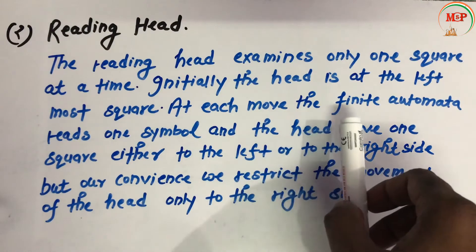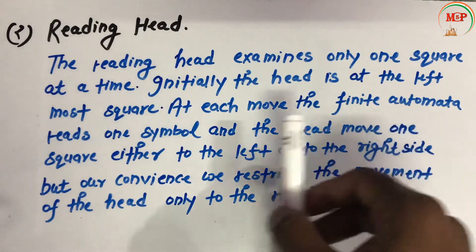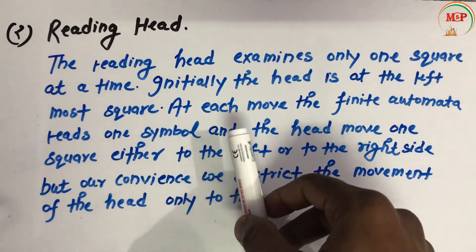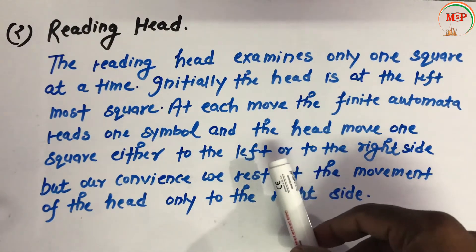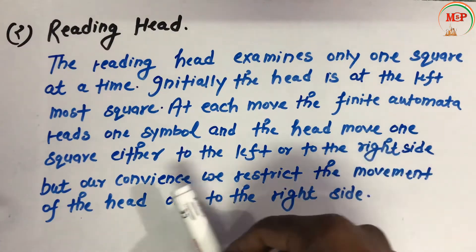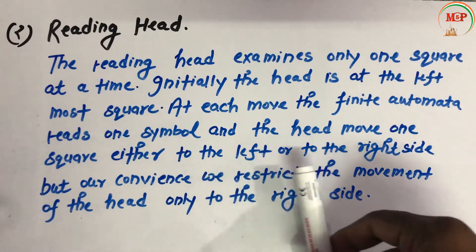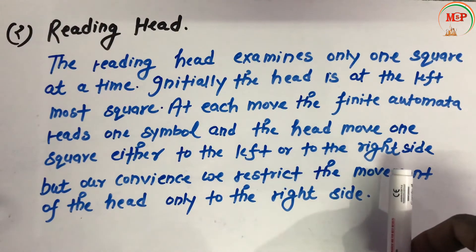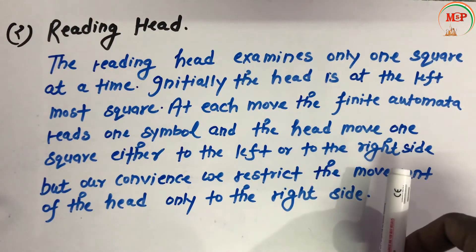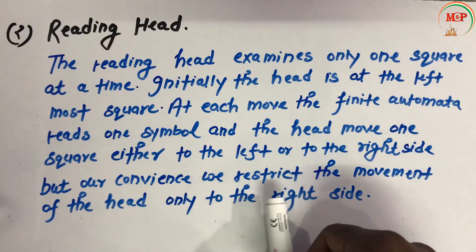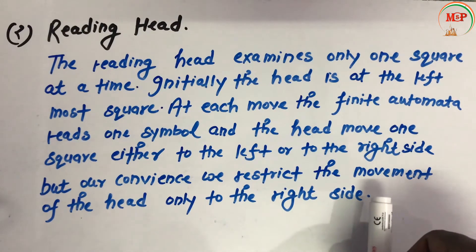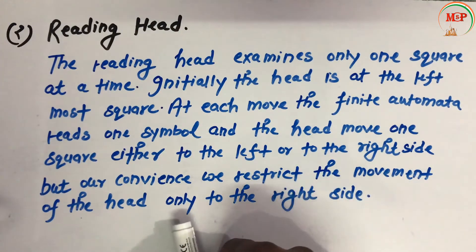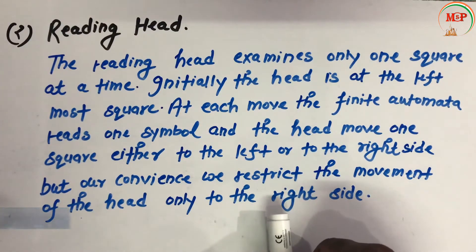At each move, the finite automata reads one symbol, and the head moves one square either to the left or to the right side. For our convenience, we restrict the movement so that the head only moves to the right side.